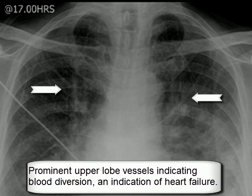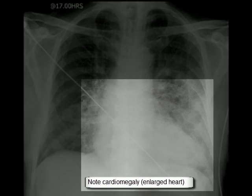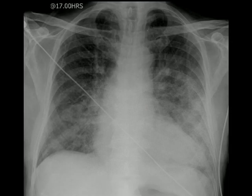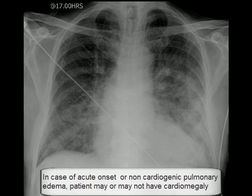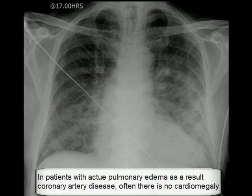However, in cases of acute heart failure, fluid will quickly fill the alveoli before the lymphatics have time to become visible as septal lines on X-rays. There are two types of pulmonary edema: cardiogenic and non-cardiogenic. Cardiogenic causes are always due to increased hydrostatic pressure within capillaries, while non-cardiogenic causes are due to increased permeability. It is important to remember that increased hydrostatic pressure will also increase the permeability of the capillary wall.